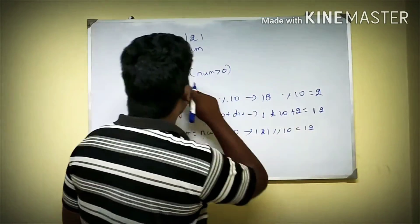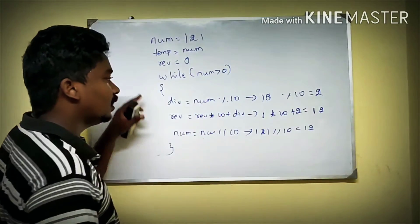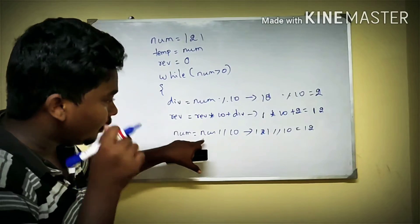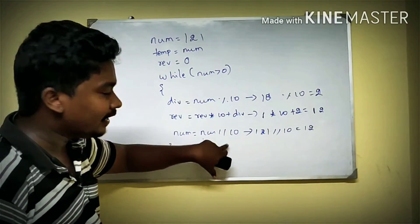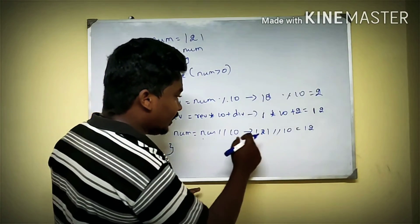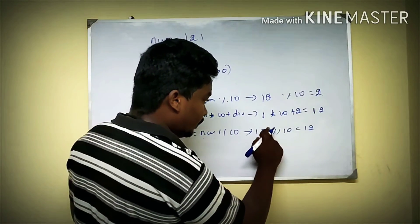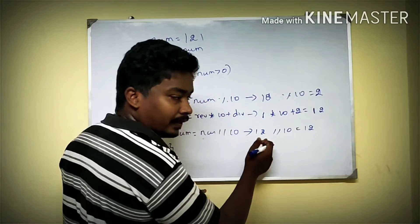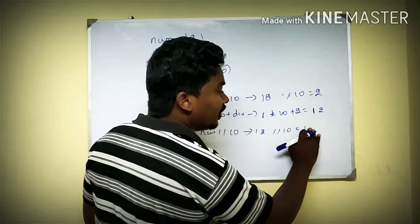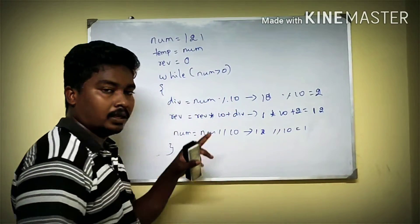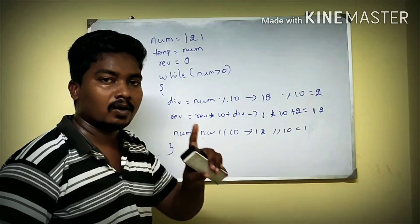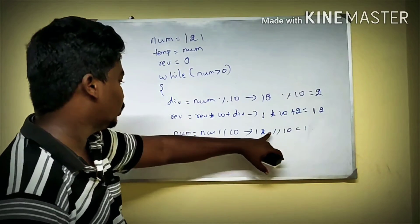So we need the value 12. We then divide by 10: 12 divided by 10 gives quotient 1. Then: 1 into 10 is 10. And 1 is equal to 1. So we continue processing until num1 becomes 0.